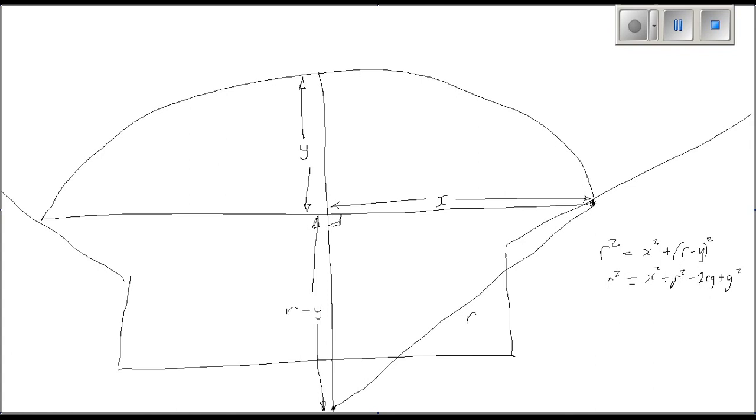And so if we move this R squared to the other side, it becomes negative, and we get R squared minus R squared. So R squared minus R squared. And then move this 2RY, plus 2RY, equals X squared plus Y squared.